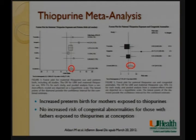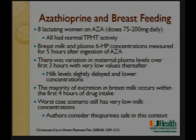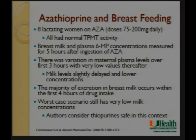Importantly, when fathers were taking thiopurines there was no increased risk of negative outcomes. The summation of data suggests that thiopurines are for the most part safe when someone has active disease, because most negative implications are driven by disease activity, not the medication itself. For breastfeeding: in a study of eight patients on varying doses of azathioprine, all with normal TPMT activity, breast milk and plasma concentrations of 6-MP were measured — after four hours the levels are very low. It is probably safe to breastfeed on thiopurines if you wait about four hours after administration.